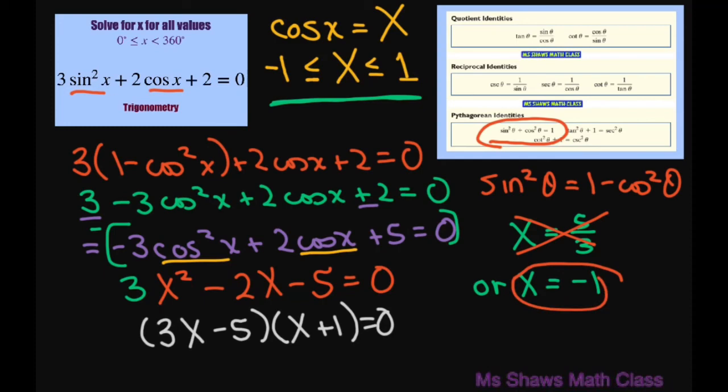Now I'm going to substitute back in my x into this. So this is going to be cosine of x equals my big X, which is negative 1. And that happens when x equals 180 degrees.